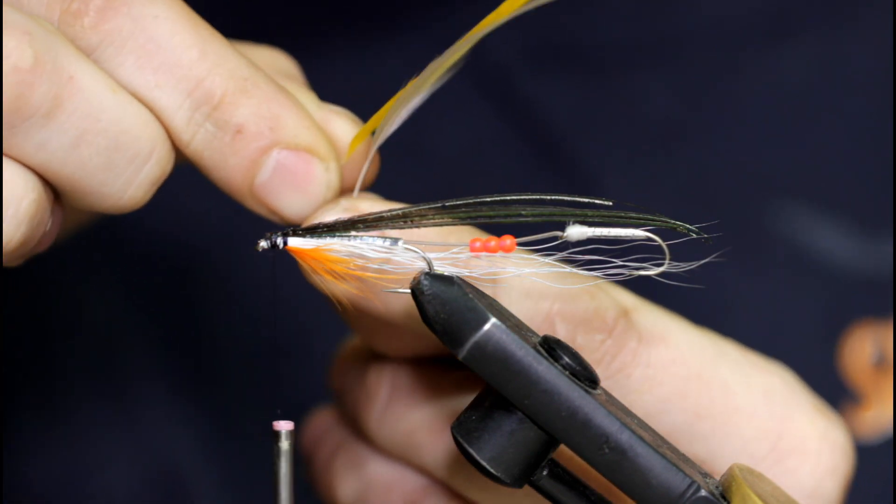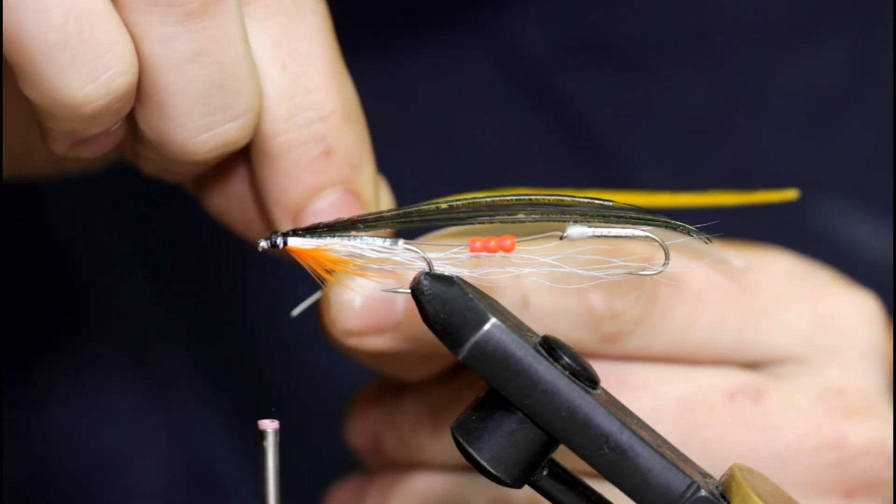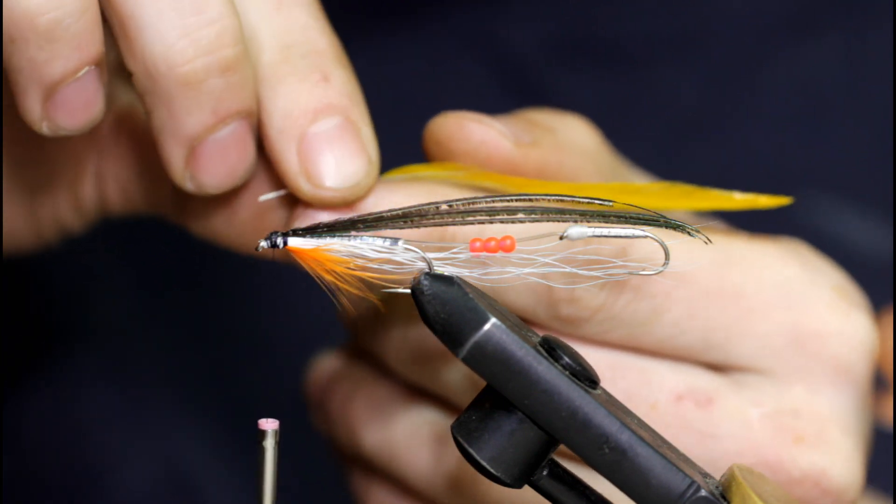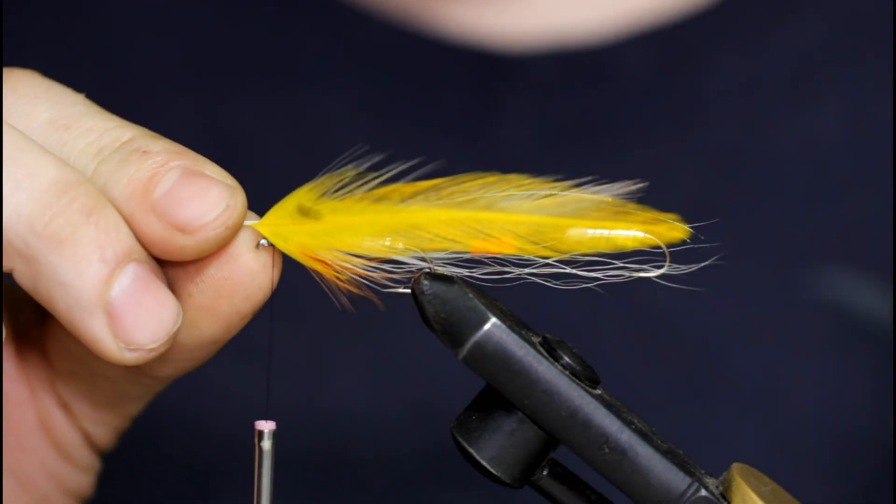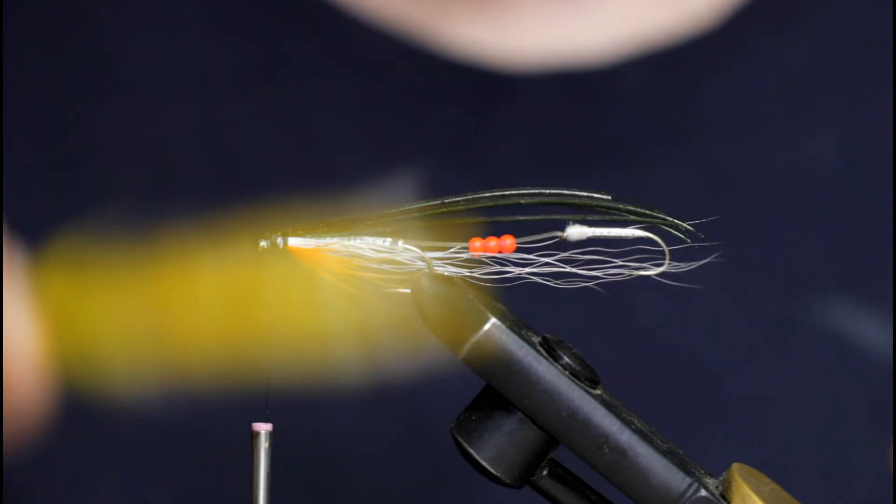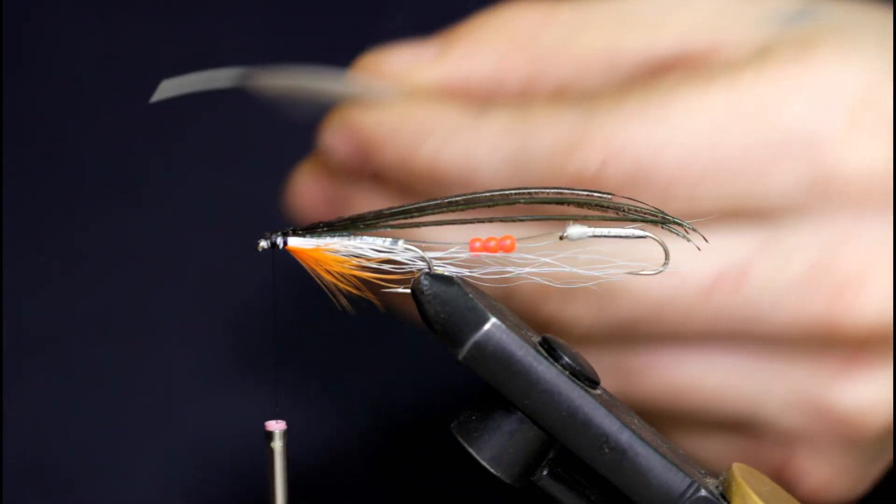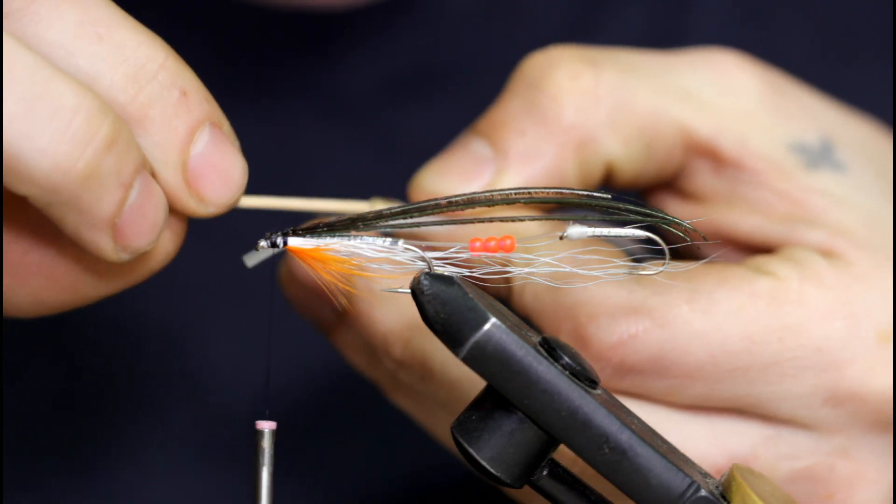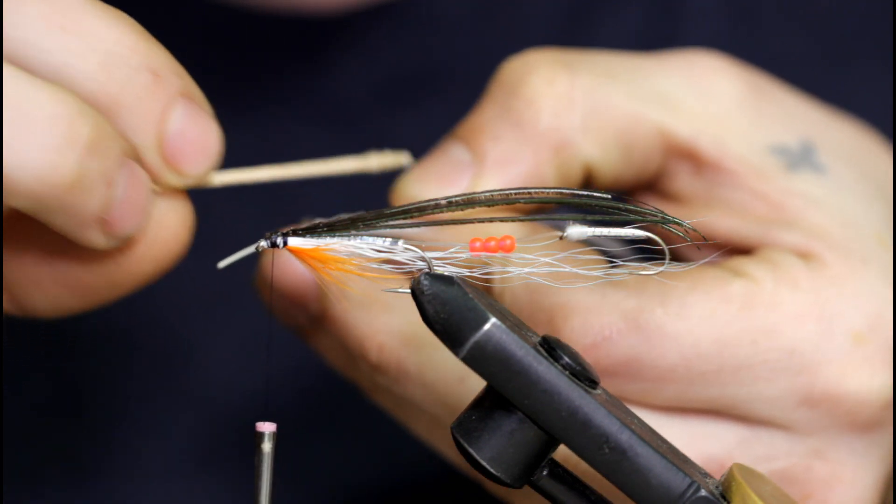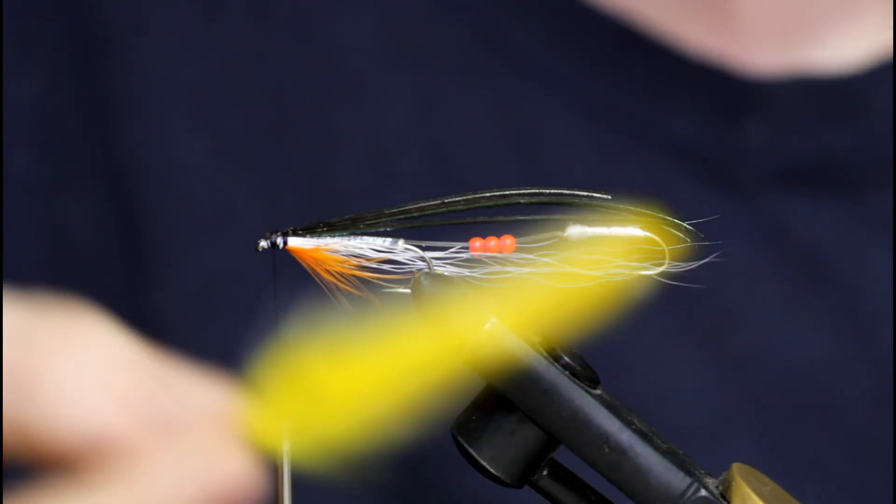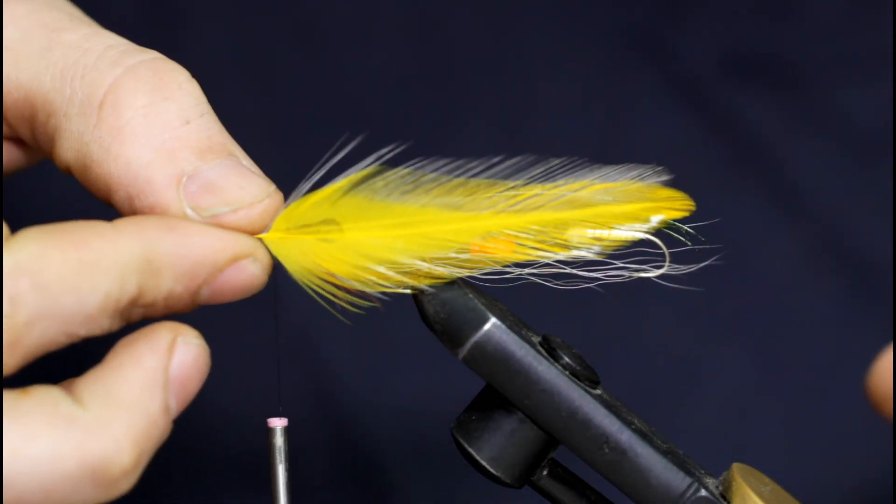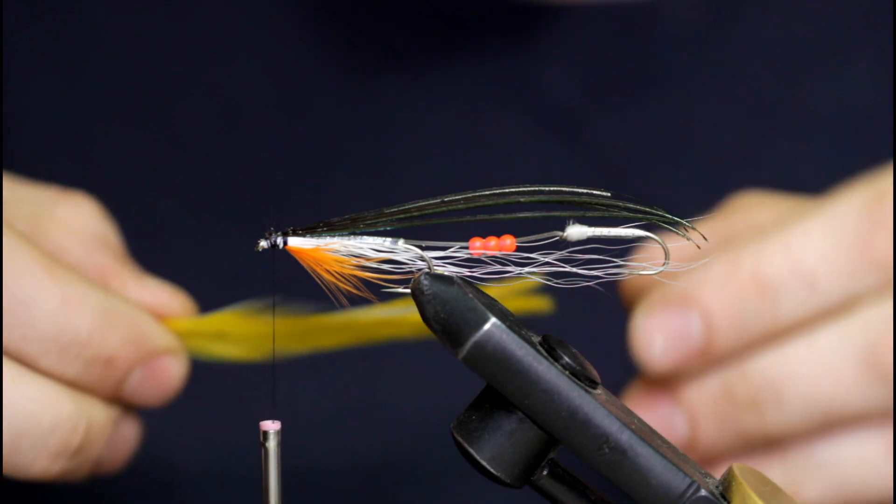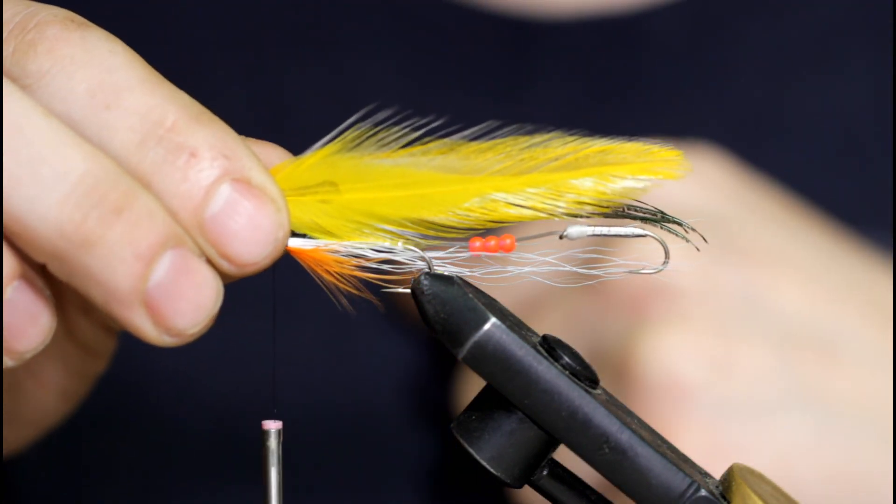I'm going to carefully set my yellow on top of the gray. Make sure the lengths line up. And do the same to the other side here. Glue at the base. Get the yellow on top. That looks pretty good. I'm going to let them dry.